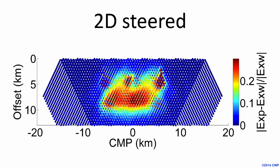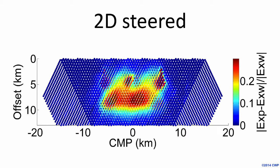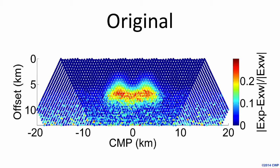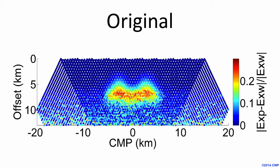This is the result of our 2D optimized synthetic aperture. Comparing to the original data, we've increased the magnitude of the anomaly — the maximum here is 46%, compared to 27% of the original data. We've also increased the spatial area of the anomaly and almost completely stacked out the effects of the noise.